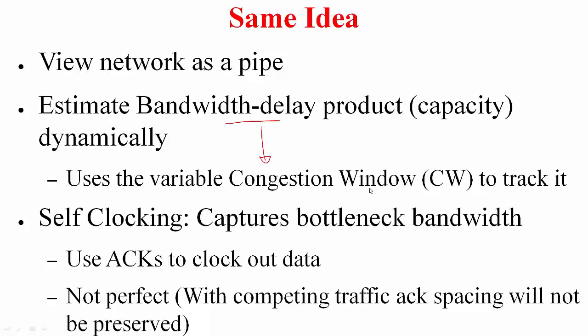As part of this estimate, we use a variable called the congestion window that tracks the bandwidth-delay product. Just as the sliding window protocol uses self-clocking to determine the bottleneck bandwidth and clock out data using ACKs, congestion control does the same. What is new is that after understanding the problem motivation and the subtleties of the sliding window protocol, we can better appreciate the congestion control mechanisms discussed in later videos.